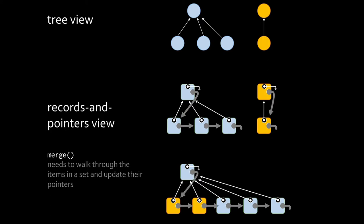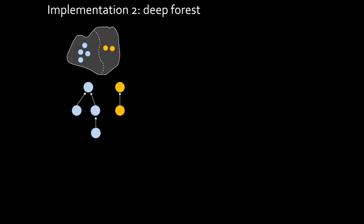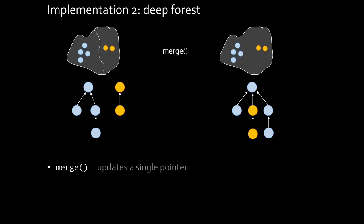The trouble with this is it can be quite a lot of work to update all the pointers. So, to avoid that work, here's a different implementation. I'll call this the deep forest. Again, I'll implement it as a forest, as a collection of trees, and I'll let the root of each tree be the handle that I used to refer to that set. So, with this implementation, merge is very simple. All we need to do is we take one of the trees and update its parent pointer to point to the root of the other tree.